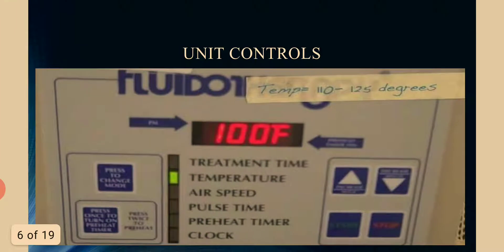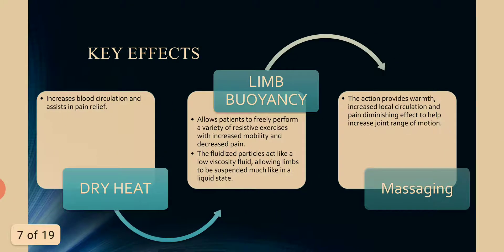Unit controls include: treatment time, temperature, air speed, pulsed time, preheat timer, and clock. The operating temperature range is 110 to 125 degrees Fahrenheit.